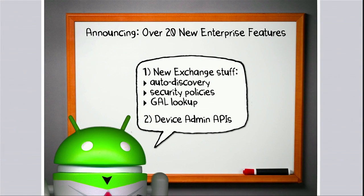Let me touch on two of them. Number one, we've become Microsoft Exchange-friendly. That means things like auto-discovery, integration with the global address book, and the security policies available in Exchange can be enforced upon the device. Number two, we've added new APIs for device management, so you can build software that does critically important things like remote wipe of the device if necessary.